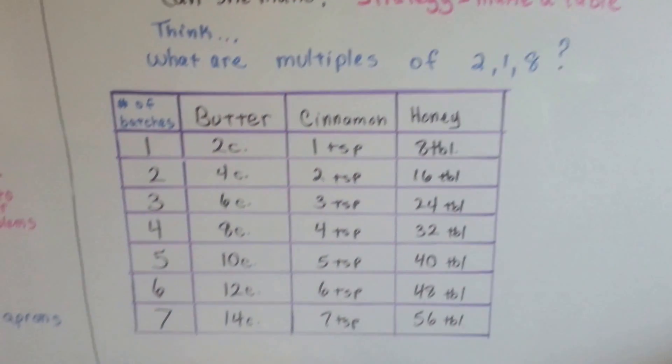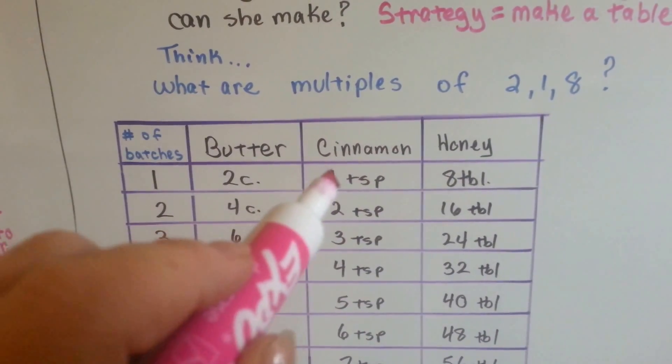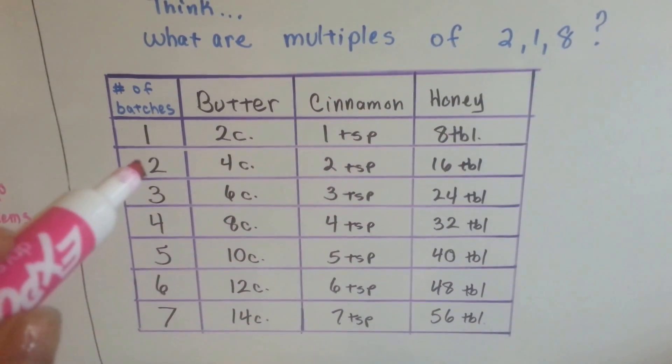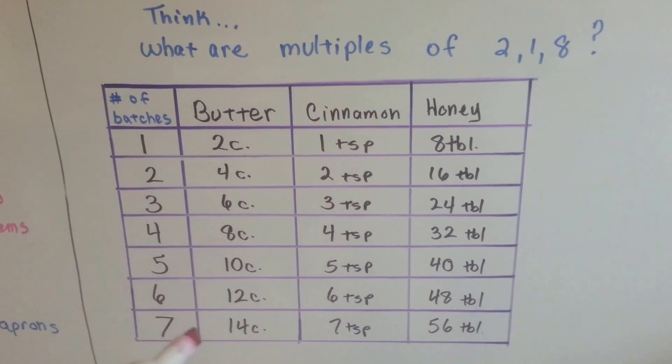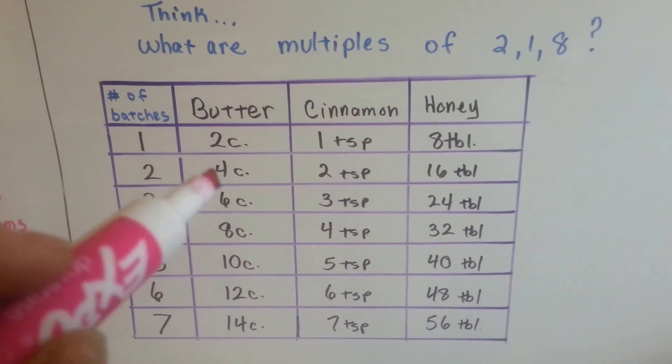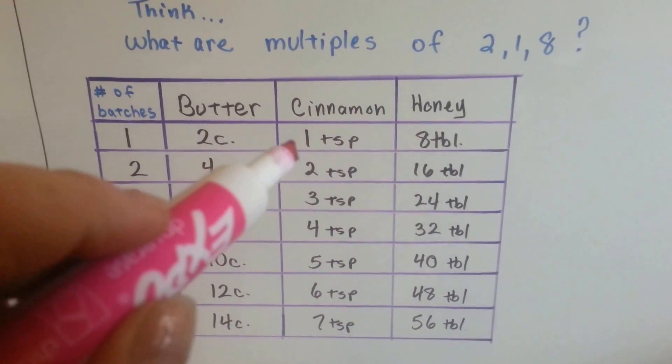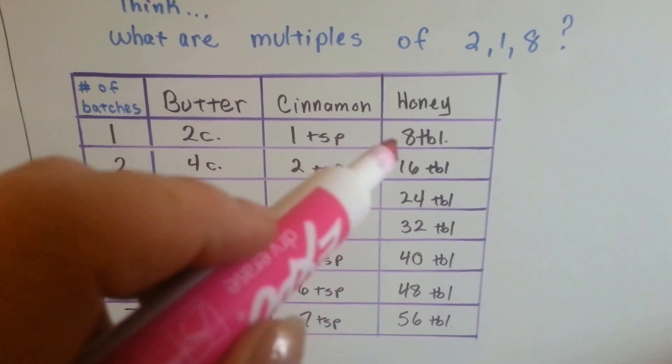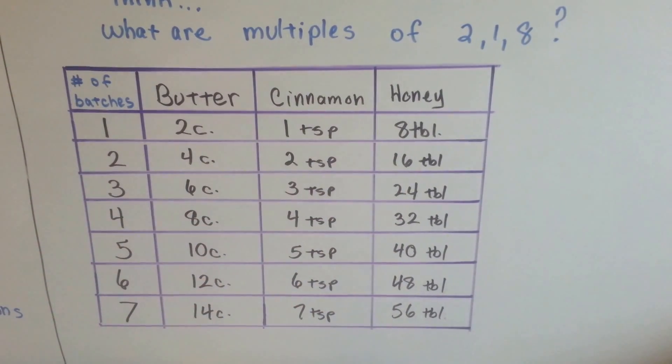One batch is the 2 cups of butter, the 1 teaspoon of cinnamon, and the 8 tablespoons of honey. So we made multiples going down, because here's the number of batches. Multiples of 2: 2, 4, 6, 8, 10, 12, 14. The multiples of 1 are easy: 1, 2, 3, 4, 5, 6, 7. And then we have the multiples of 8: 8, 16, 24, 32, 40, 48, 56.